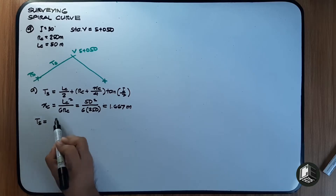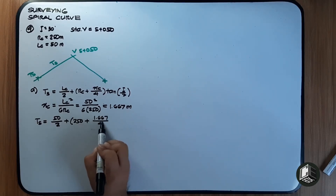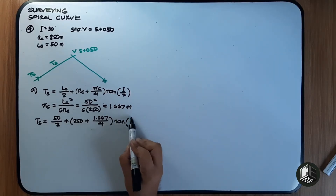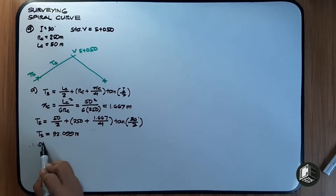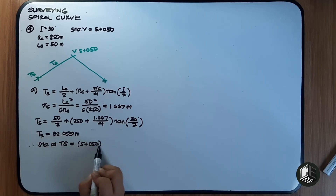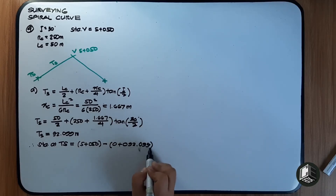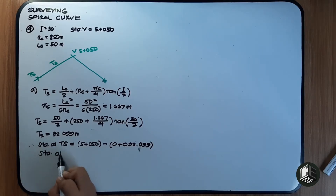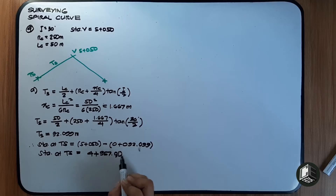Now computing T sub S: LC is 50 over 2, plus RC of 250 plus XC of 1.667, over 4, multiplied by tangent of I which is 30 degrees, divided by 2. T sub S equals 92.099. Therefore, the station at TS equals 5050 minus 92.099, which gives station TS equal to 4,957.901.